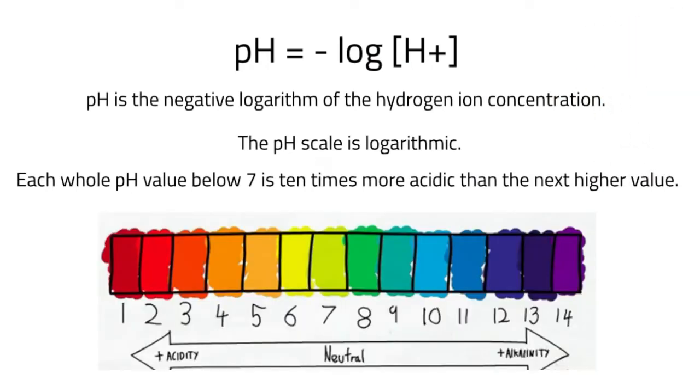So for example, a pH of 4 is 10 times more acidic than a pH of 5. And a pH of 4 is 100 times, so 10 times 10, more acidic than the pH of 6. And that is what we mean by logarithmic.